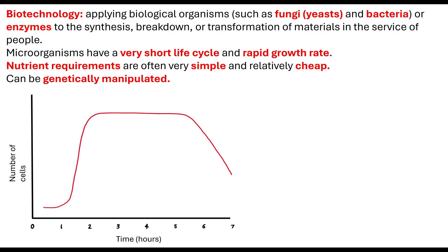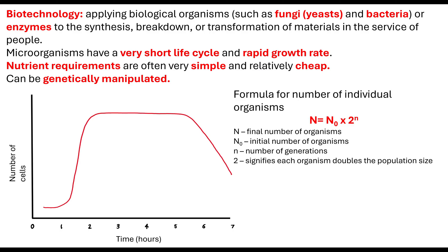The other thing is that they can be genetically manipulated — check out my videos on manipulating genomes. The fact that we can take the plasmid of a bacterial cell and insert a gene like the human insulin gene means we can actually produce very vital materials in the service of people. Now, it is important that we note how to calculate the growth of individual organisms, using the formula: N equals N0 times 2 to the power of n.